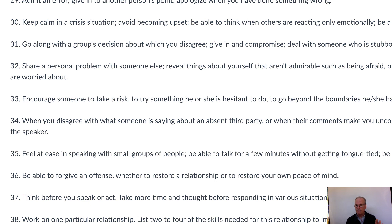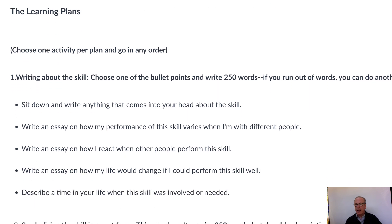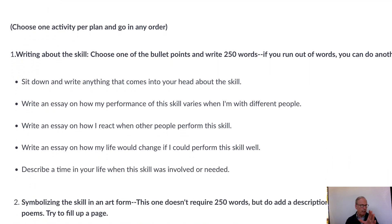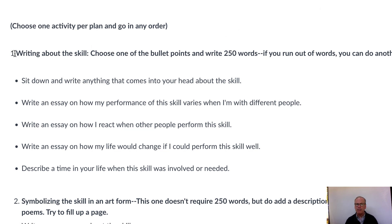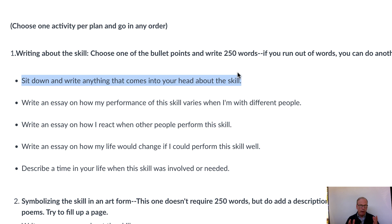Once you've picked your skill, let's go to the next step and look at what we call the learning activities. There are eight groups, and the idea is to give you a lot of choices. For example, the first type of activity is writing about the skill, and you get to pick which one of five different types of writing activities you want to do. You only have to do one of these. Typically a lot of people just do the first one — sit down and write anything that comes into your head about the skill, like free-writing in a journal. When you're done with that, you've done number one and you don't have to do the other writing activities.